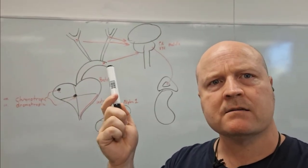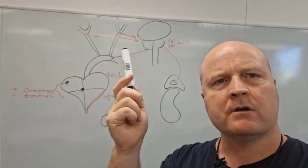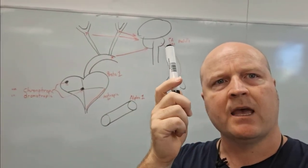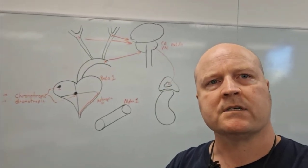So when they sense a decrease in the amount of stretch, they're going to send messages to our medulla in our brainstem, and we've got our cardioacceleratory center and our vasomotor center.